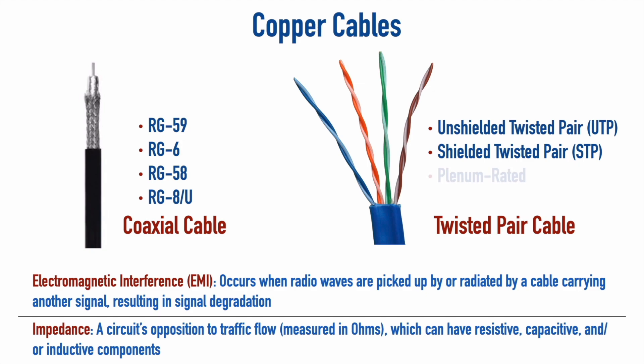Another variant you should know about is plenum-rated twisted pair cabling. When running cable underneath a raised floor in a data center, or above a drop ceiling in an office, those areas may be used for the HVAC system's cold air return — those are called plenum areas. You don't want to use regular cable there because when regular insulation is exposed to extreme heat, such as in a fire, it can release toxic fumes. You don't want toxic fumes pumped through your building via the HVAC system, so you use plenum-rated cable, which has insulation that will not release toxic fumes under extreme heat.